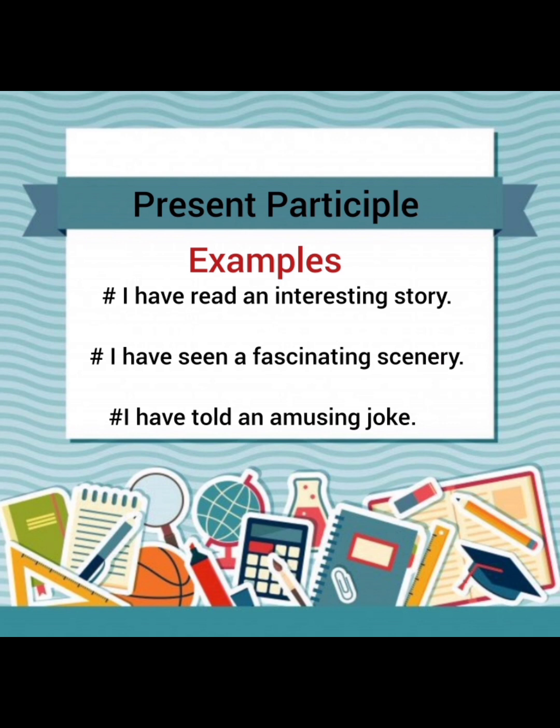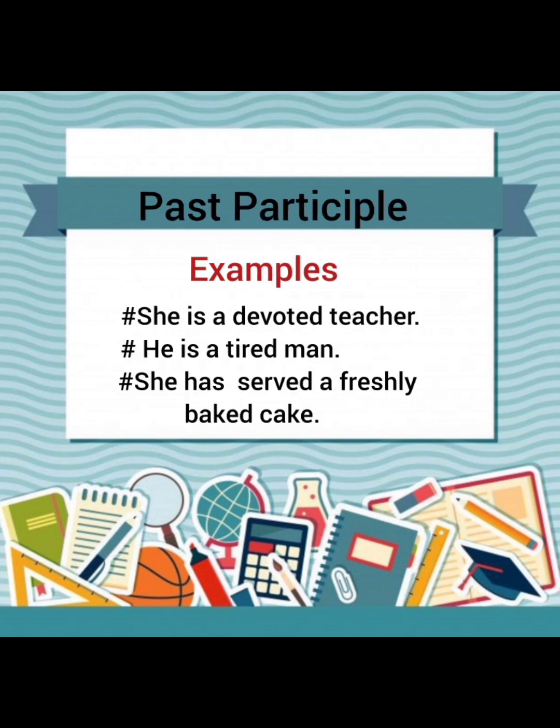'Amusing' is formed of verb plus -ing, that is known as present participle, but here in this sentence its function is of an adjective. Now let's turn to past participle — let's have a look at the examples.